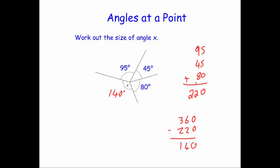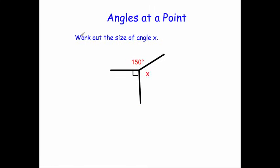Let's have a look at another question. This time we need to work out the size of angle X, and we've got three angles that meet together: 150 degrees, X, and one marked with a right-angle symbol. You should remember that this symbol means it's a right angle, so make sure you write 90 degrees beside it. So to find X, we're going to add up the two angles we're given and take it away from 360.